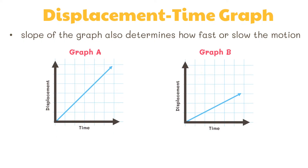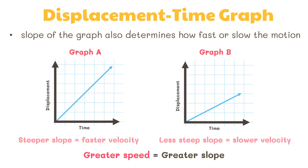A steeper slope indicates a faster velocity. Thus, the velocity of the object represented by graph A is faster than the velocity of the object represented by graph B. The greater the speed of an object, the greater the slope of a displacement-time graph.